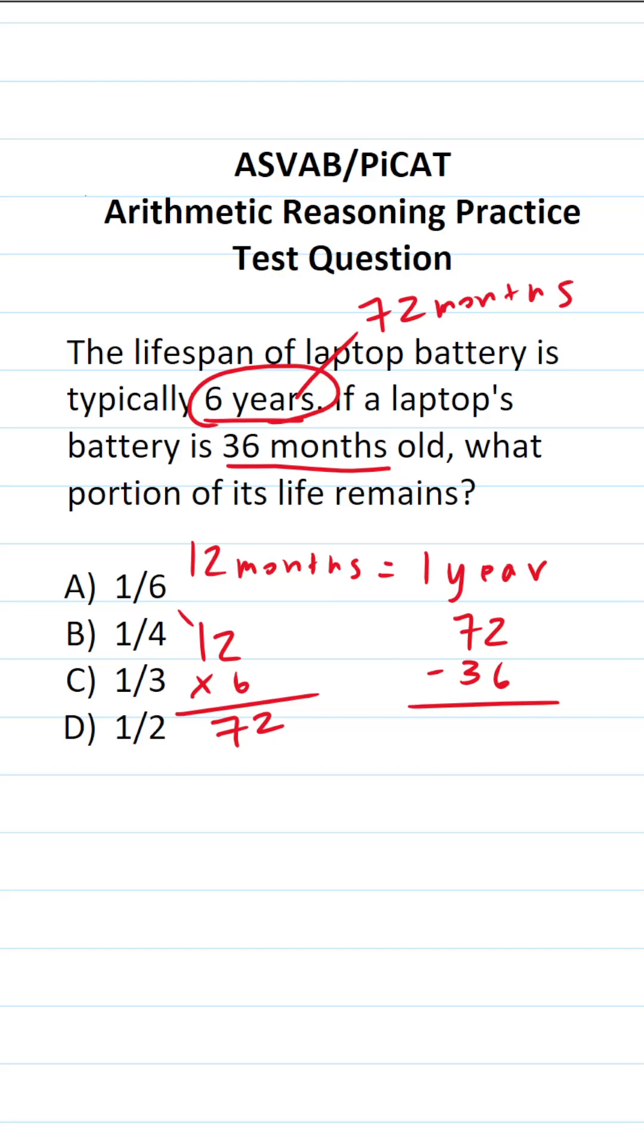Two minus six we can't do, so we have to borrow. This becomes six. This becomes 12. 12 minus six is six. Six minus three is three. So it has 36 months of life left. It has a lifespan of 72 months.